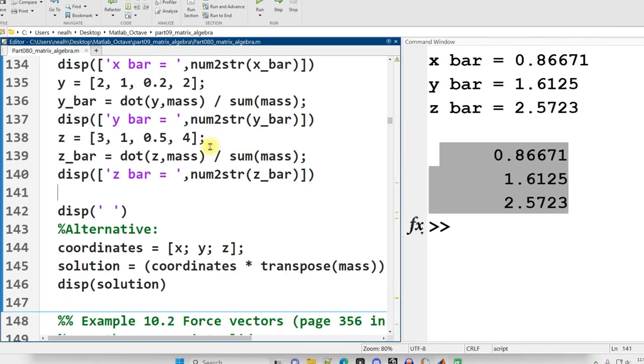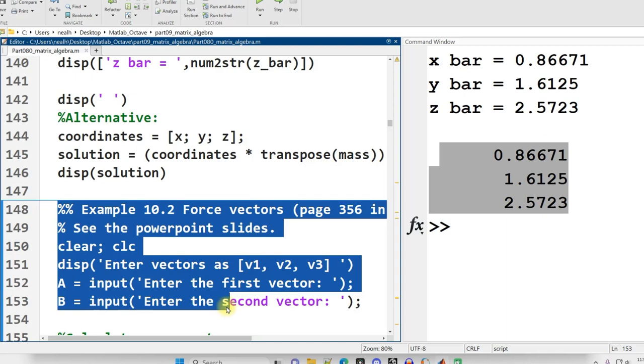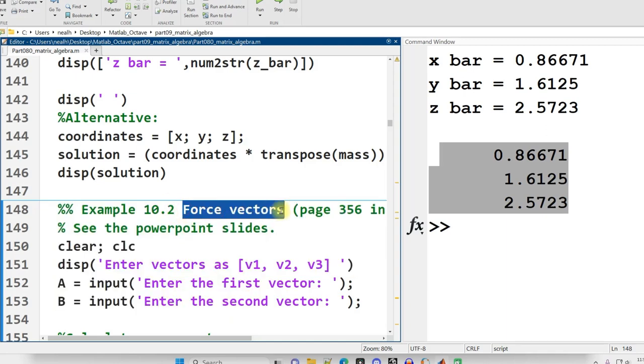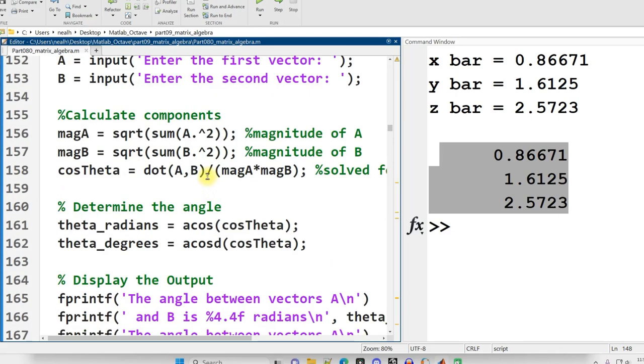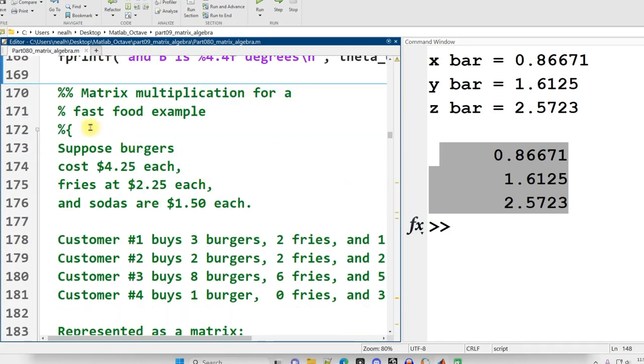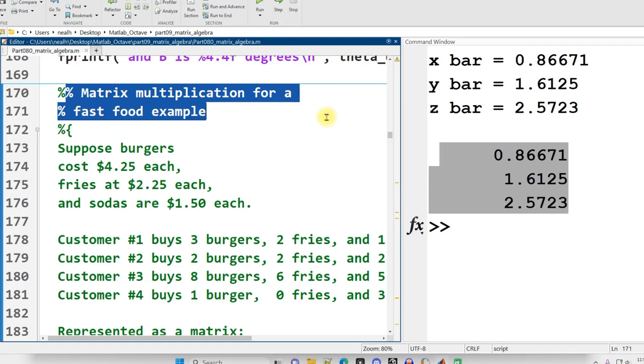Okay. Now, a little bit confusingly, I'm going to skip this example. I'm going to do this example with the force vectors in the very next video, but I want to skip that for now, because there's a little bit of background information I got to give. So I'm going to skip that and move down to matrix multiplication for a fast food example.